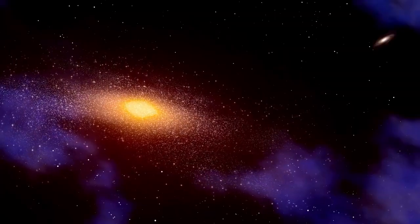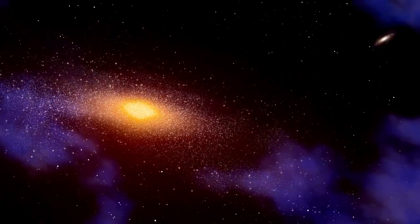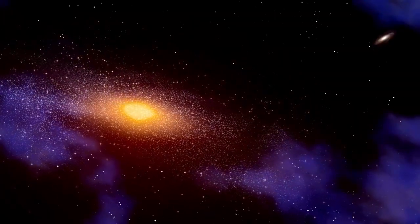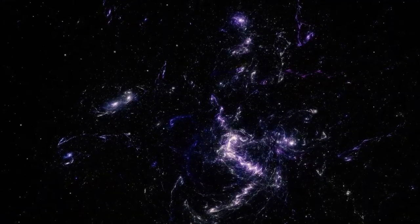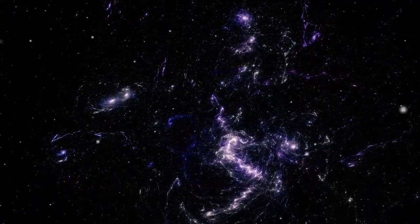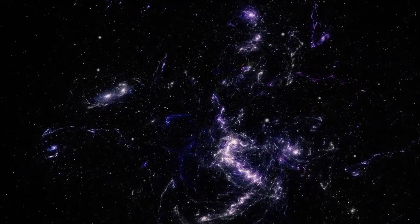For decades, scientists believed they had a clear picture of how the universe evolved. First came the Big Bang, then a Dark Age. Slowly stars began to form, then galaxies, and eventually life. The further back in time we look, the simpler things should appear, just faint hydrogen clouds and scattered particles.